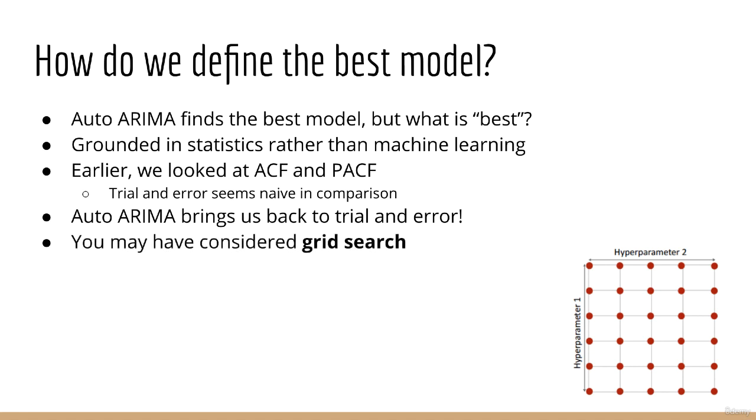Now, one method you may have thought of is grid search. That is, searching through every possible set of hyperparameters in a grid. For example, if you had two hyperparameters to search for, this would be a two-dimensional grid.